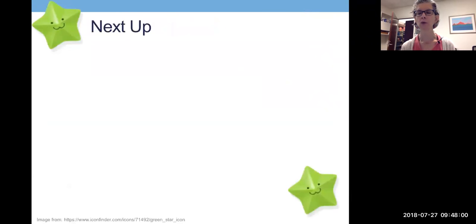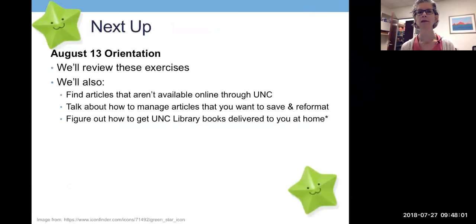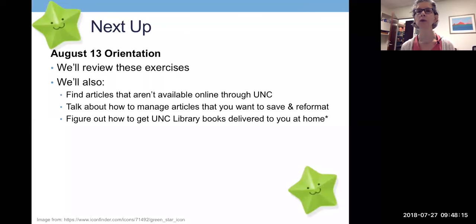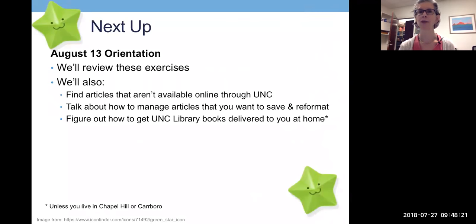Next up for you is orientation on August 13th. We'll go over these exercises, I'll show you how to find articles that aren't online, I'll show you how to manage articles that you want to save and reformat, and I'll also show you how to get UNC library books delivered to your home unless you live in Chapel Hill or Carrboro — we'll talk about that too.